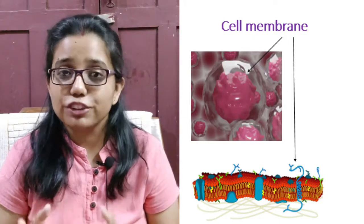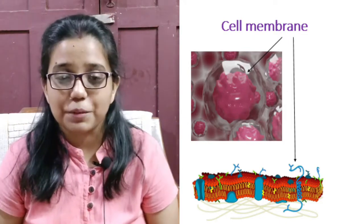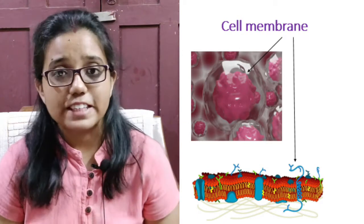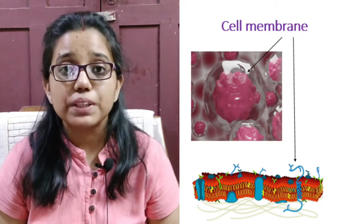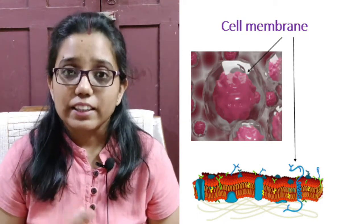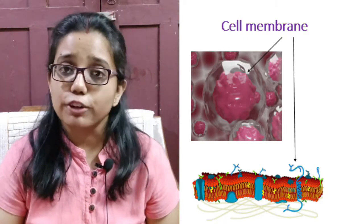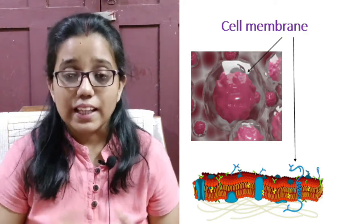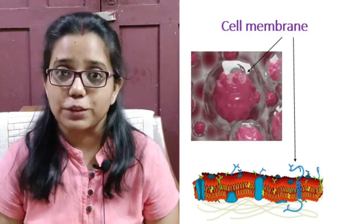We will study the process of diffusion and osmosis in next class. Plasma membrane is very flexible and it is composed of lipid and proteins. And sometimes it engulfs food and other materials from the external environment. And this process is called endocytosis.